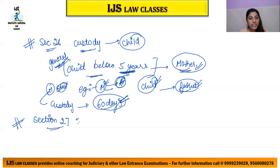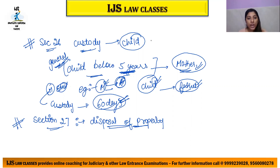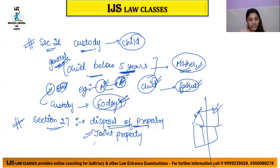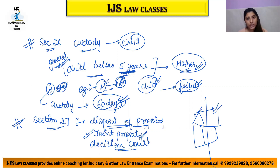Section 27 deals with disposal of property. For example, after a divorce, if the husband and wife had joint property in both names, who gets it? The court will decide how to distribute the joint property between the two parties.